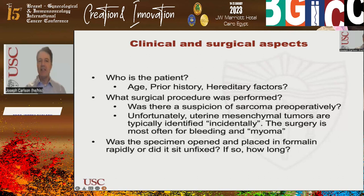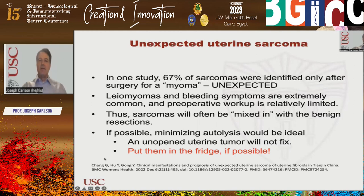Consider the clinical aspects: who is the patient, what age, what procedure was performed? Was the specimen opened and placed in formalin rapidly, or did it sit unfixed? Unexpected sarcomas are unfortunately the norm in the uterus. In one study, 67% of sarcomas were identified only after surgery for a leiomyoma. Leiomyomas and bleeding symptoms are extremely common, and the preoperative workup is quite limited — maybe an ultrasound, but it can be quite cursory.